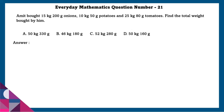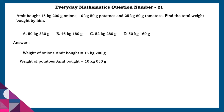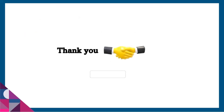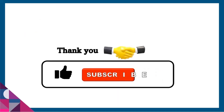Question 21: Amit bought 15 kg 200 grams onions, 10 kg 50 grams potatoes, and 25 kg 80 grams tomatoes. Find the total weight bought by him. Total weight is onions plus potatoes plus tomatoes, which equals 50 kg 330 grams. That's it for this video - make sure to subscribe, hit the like button, and turn on post notifications so you never miss a video. See you next time, goodbye!